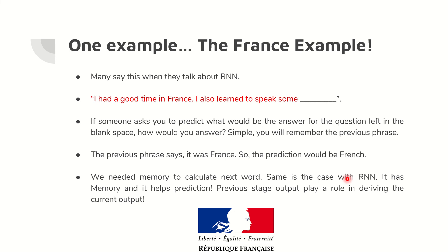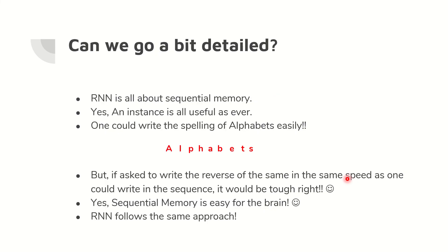A very common example to make this clear is the France and French example. Consider: 'I had a good time in France. I also learned to speak some ___.' If someone asks you to predict the blank, you will remember the first phrase — 'I had a good time in France' — and France immediately connects to French in your brain. We needed memory to remember it, and the same is the case with RNN: it has memory and that helps prediction.